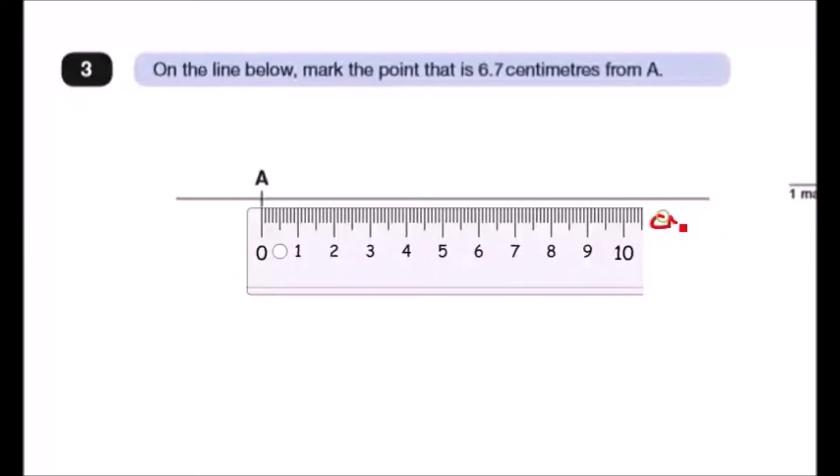And then I want you to put the value of zero at A, so this is basically going to be the starting point. And now we have to make sure that the ruler is perfectly in line with this. The best thing to do is always put the ruler on the line so you can actually see how far it goes.